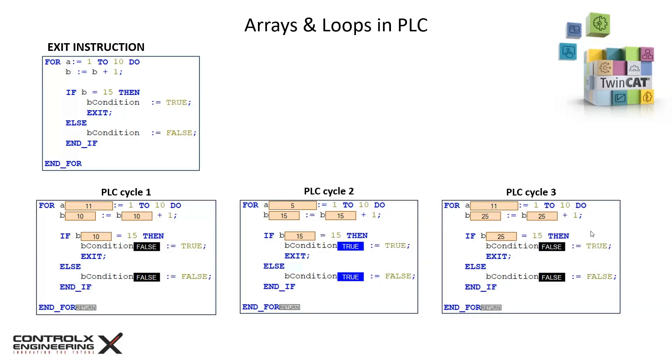At the end of the third cycle, b will increment another 10 times, and for the remaining cycles it will never equal 15 and the b condition variable will remain false.